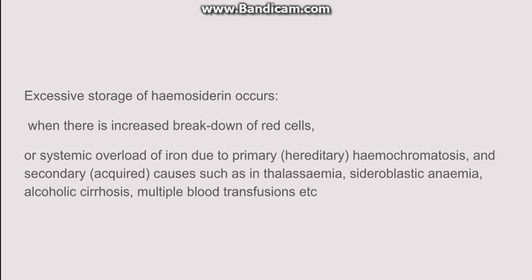The diseases associated with hemosiderin are mainly caused firstly by increased breakdown of red blood cells, as seen in hemolytic anemias, and secondly by systemic iron overload. Systemic iron overload can be seen in primary hemochromatosis, or secondary causes like thalassemia with excessive red cell breakdown, multiple blood transfusions, and sideroblastic anemia. These are all associated with excessive storage of hemosiderin.